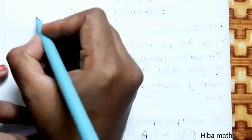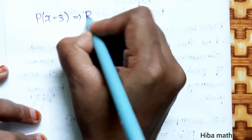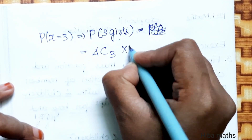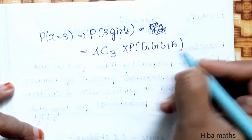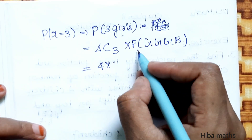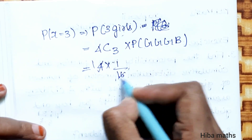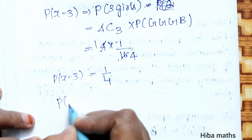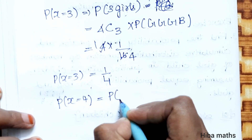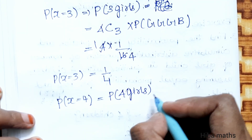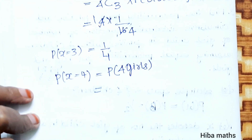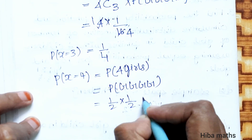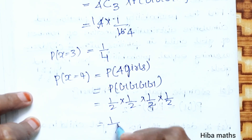Next, P(X = 3): 3 girls and 1 boy. 4C3 × (1/2)^4 = 4 × (1/16) = 4/16 = 1/4. So P(X = 3) = 1/4. Then P(X = 4): all 4 girls, no boys. (1/2)^4 = 1/16. So P(X = 4) = 1/16.